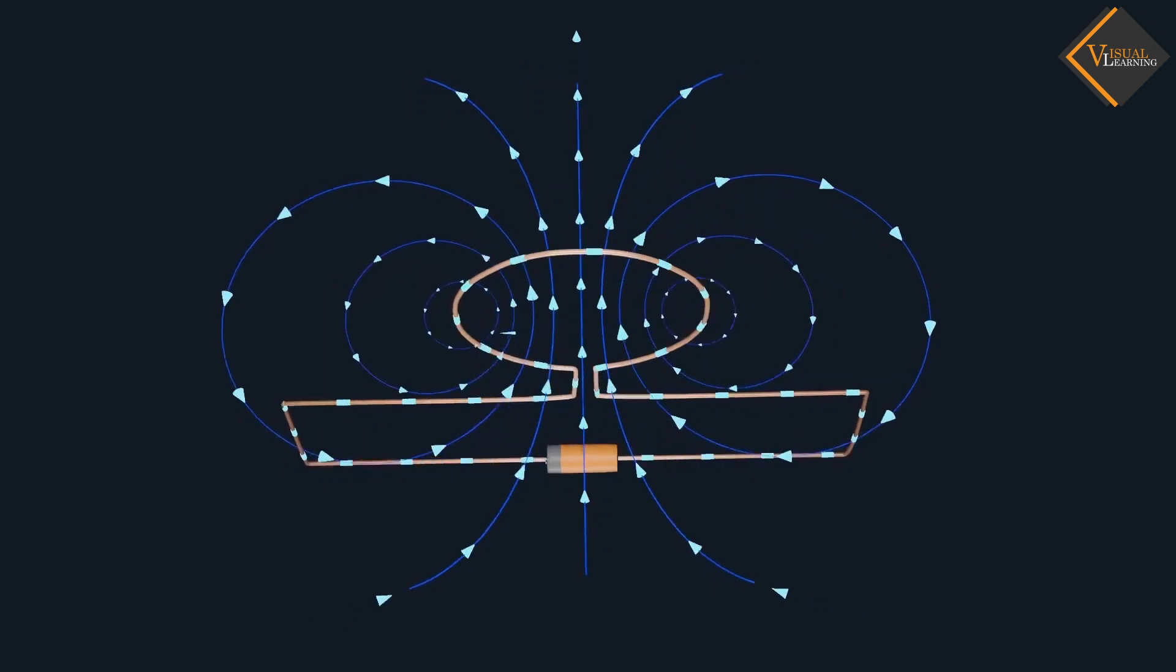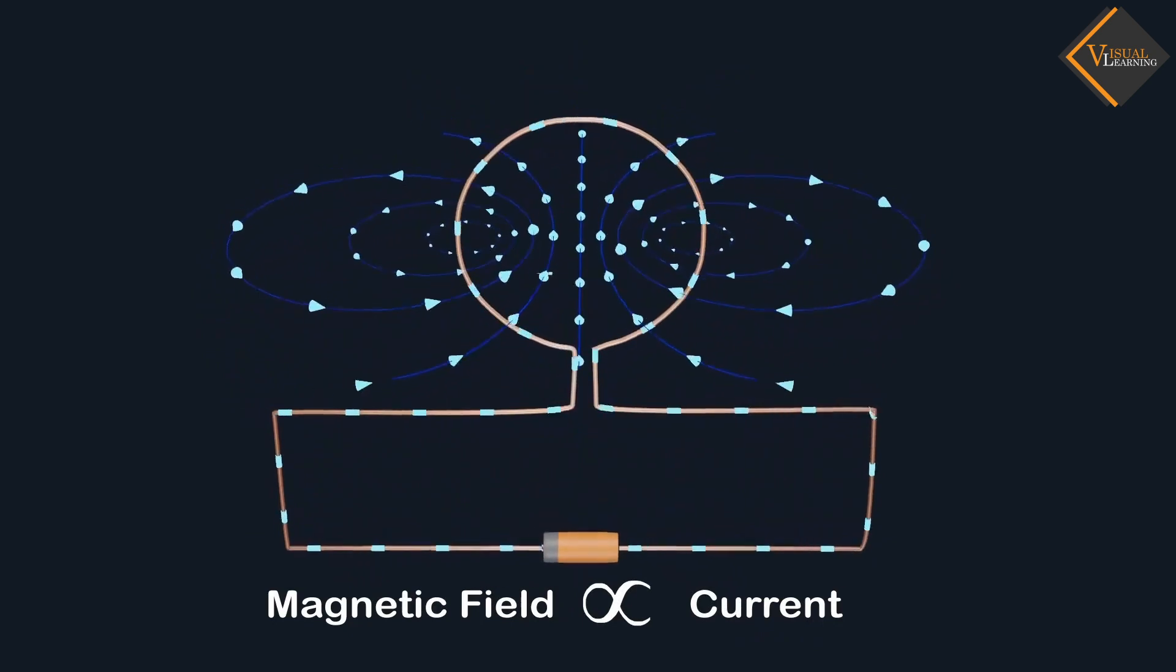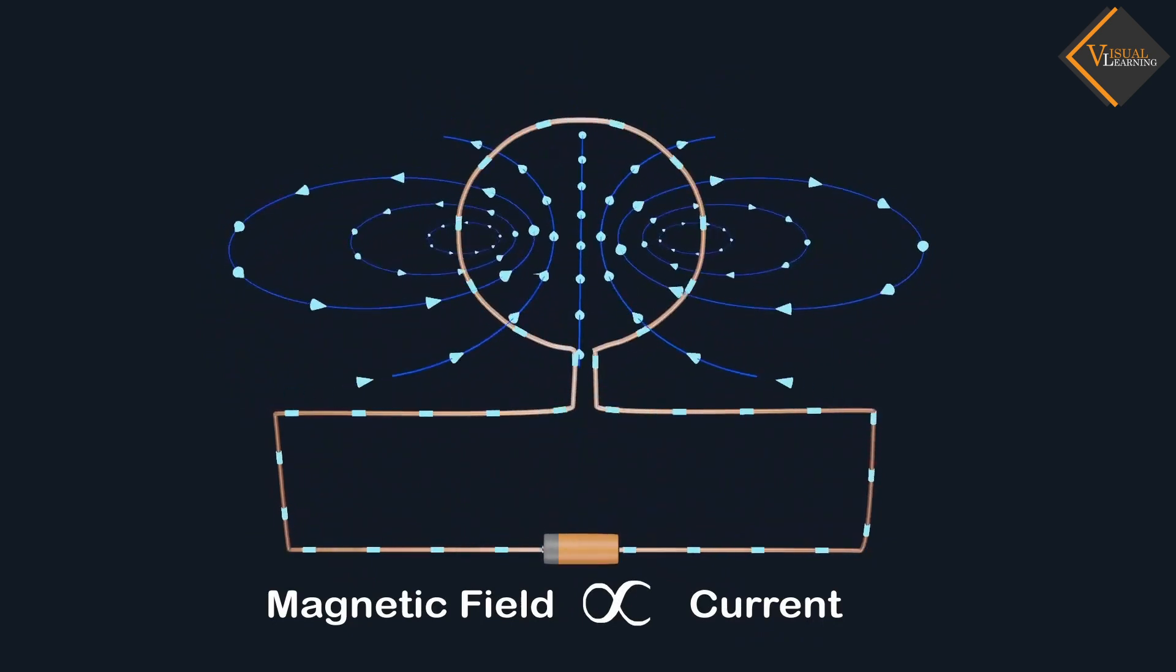We know that the magnetic field produced by a current carrying wire at a given point depends directly on the current passing through it.